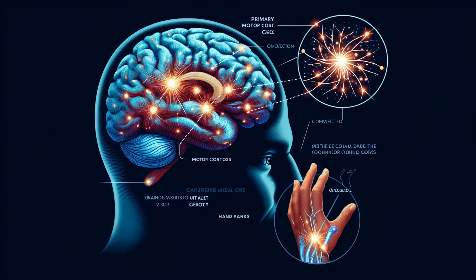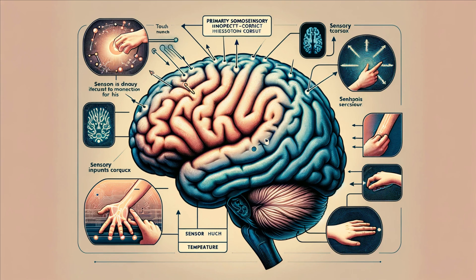The primary motor cortex, located in the precentral gyrus of the frontal lobe, is where voluntary movements are initiated. When you decide to pick up a glass of water, the neurons in this area fire, sending signals through the spinal cord to your muscles. The premotor cortex and supplementary motor area assist in planning and coordinating these movements, ensuring smooth and precise actions.